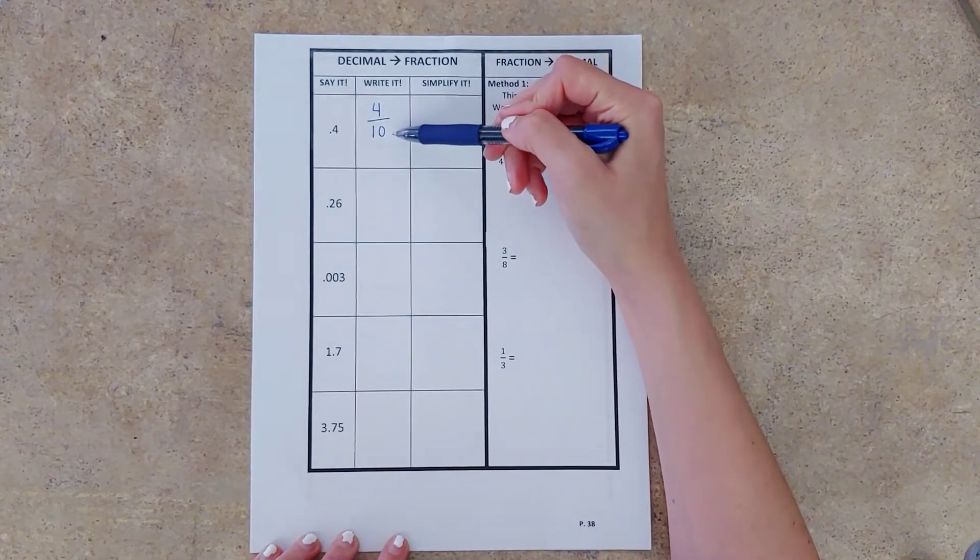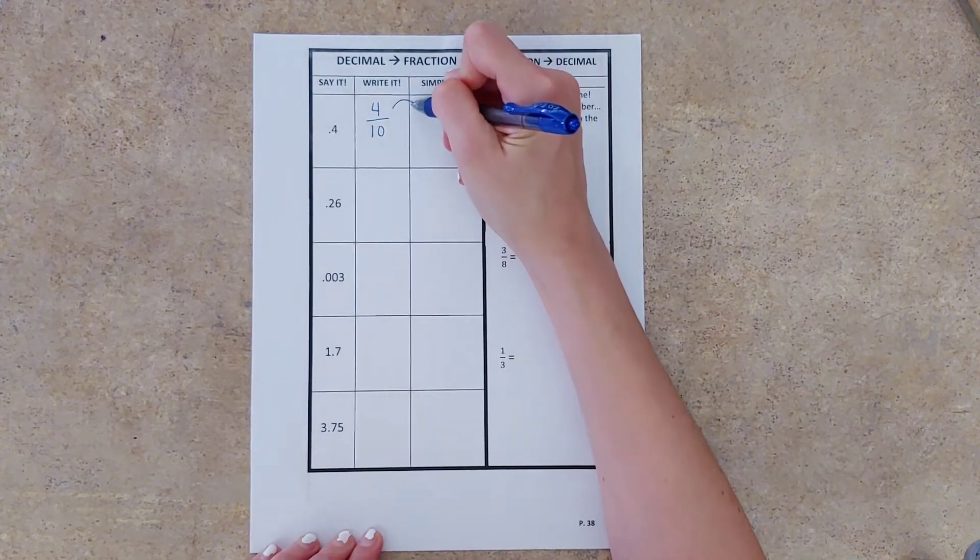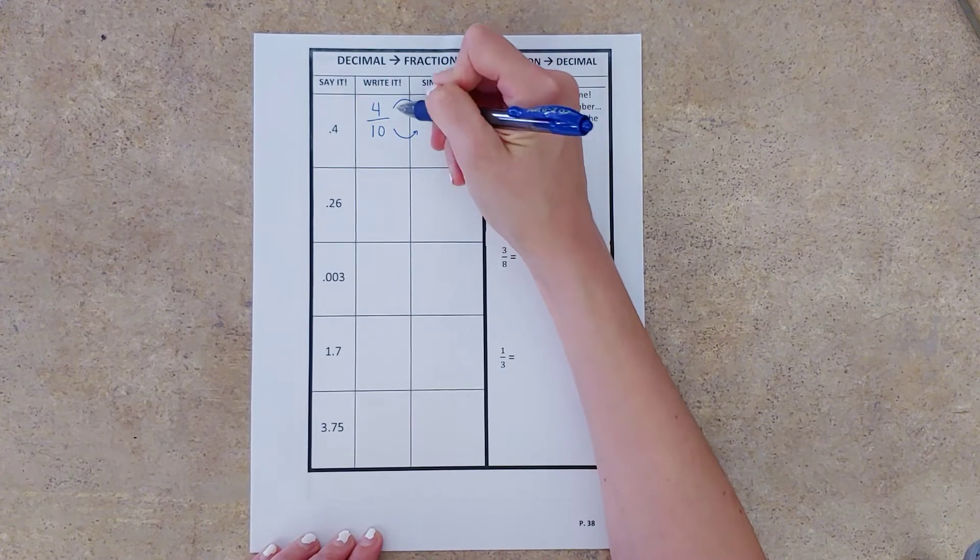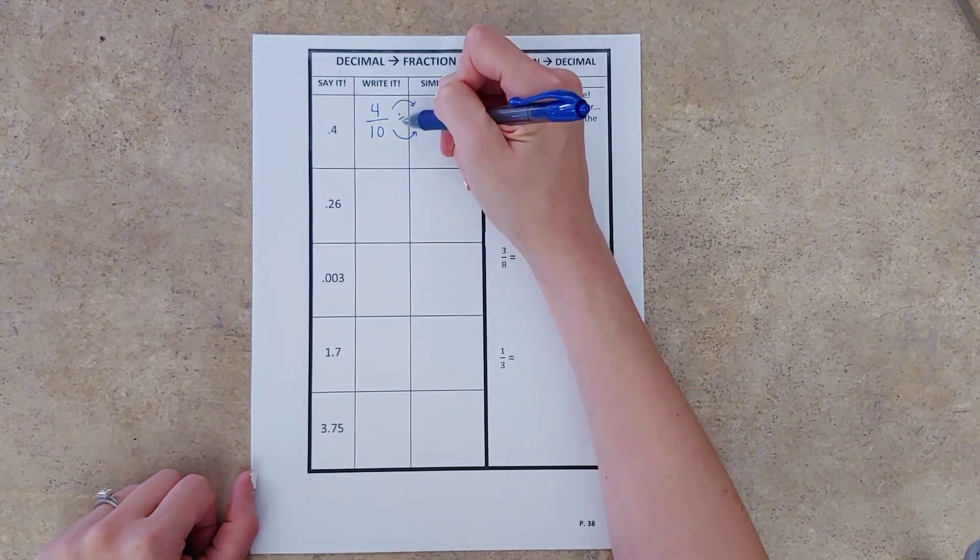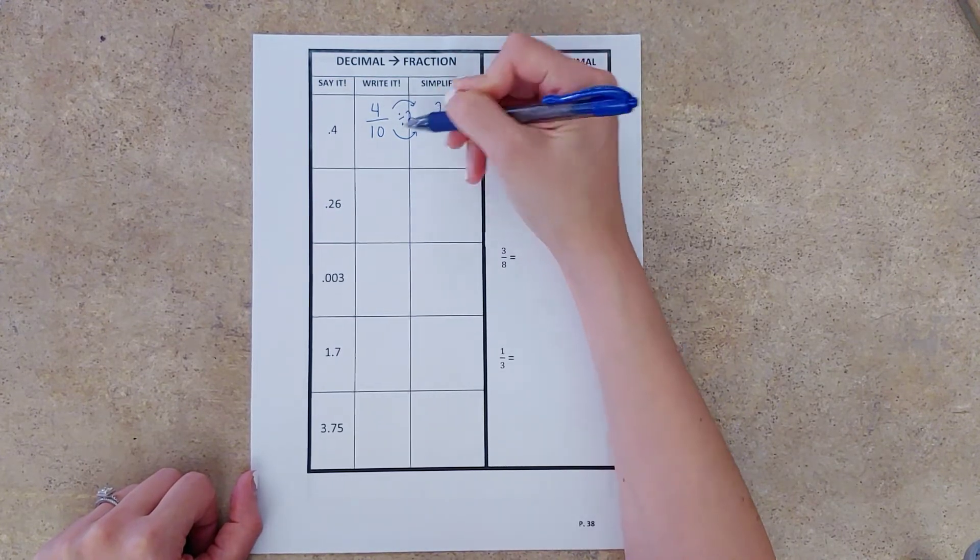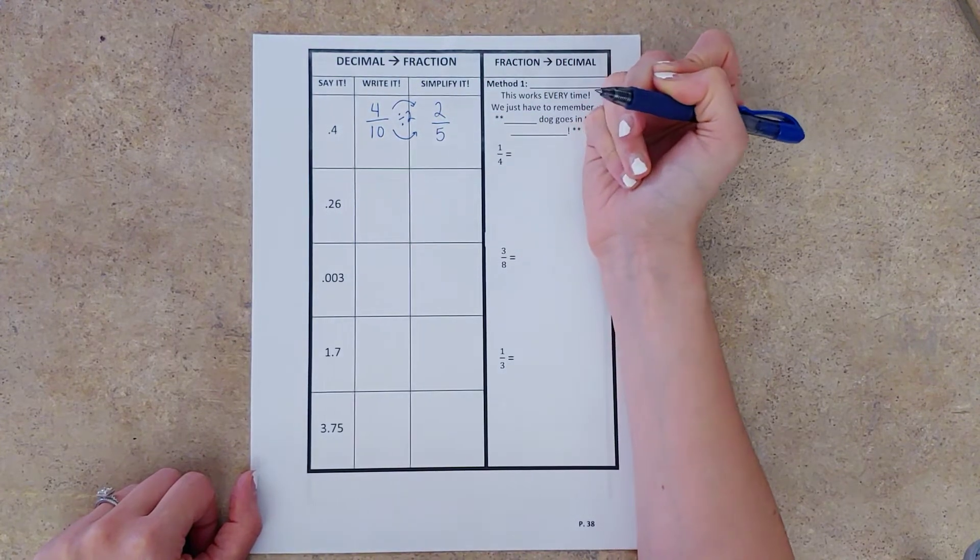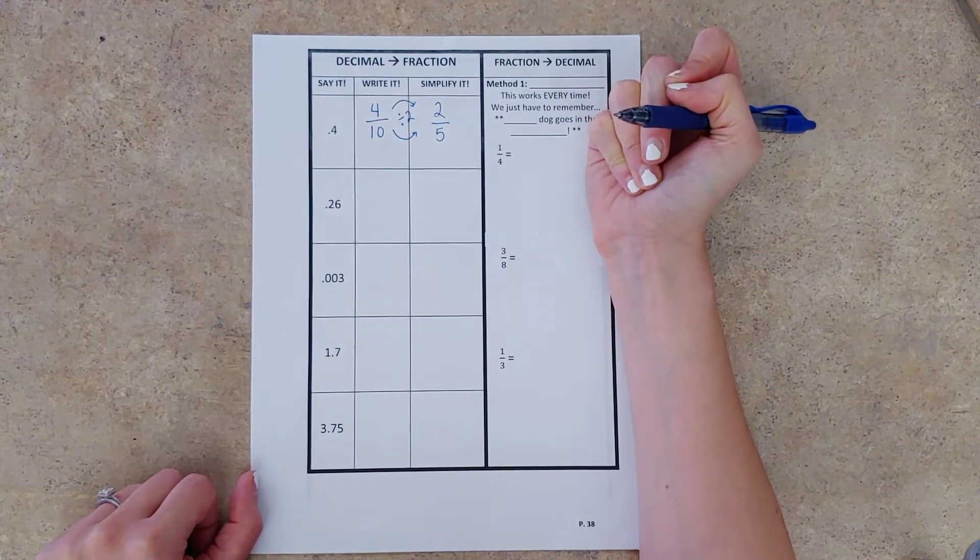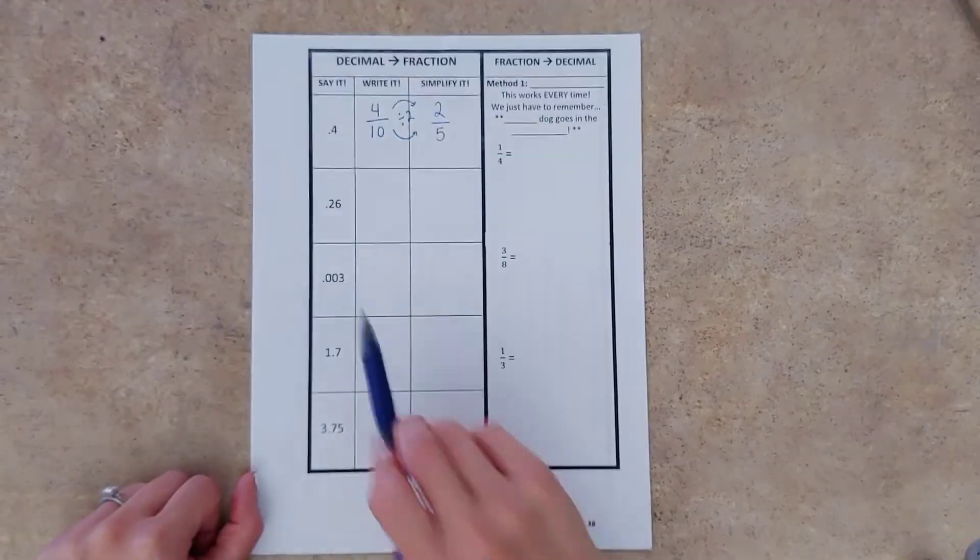What can I divide four and ten both by? Well, they're both even, so we can divide both the numerator and the denominator by two, right? So four divided by two gives us two. Ten divided by two gives us five. So the simplest way to write four tenths as a fraction would be two fifths.